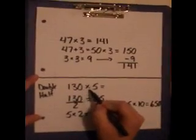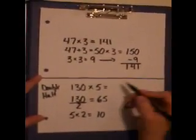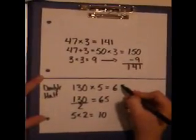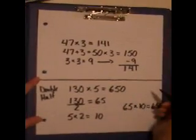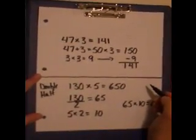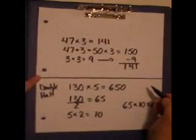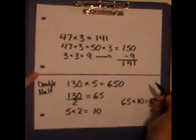130 multiplied by 5 is the same answer, 650. These are just two examples of how the compensation strategy can be used for multiplication.